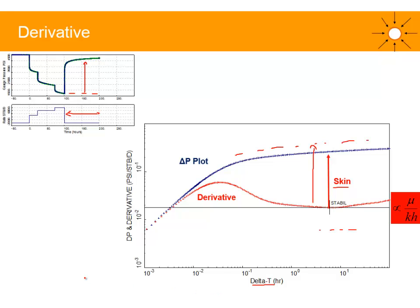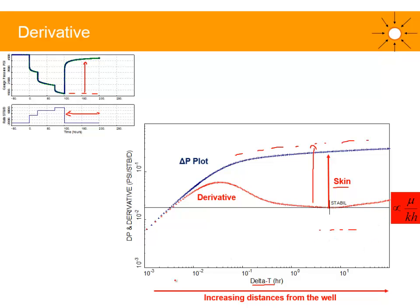The third statement is that delta T, the shut-in duration, can be replaced by the radius from the wellbore. As delta T increases, you are increasing the distance from the wellbore. Features on the derivative at early times, small delta T, happen near the wellbore. At large delta T, features correspond to large distances from the wellbore — for example, boundaries, which are represented by an increase in the derivative at late times.